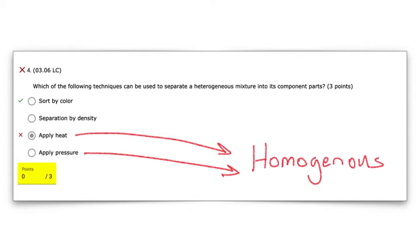So back to the question: which of the following techniques can be used to separate heterogeneous mixtures? Mixtures of a variety of different things. Those last two options, apply heat and apply pressure, we know from the definition, those are for homogenous mixtures. So we're going to cross them out.